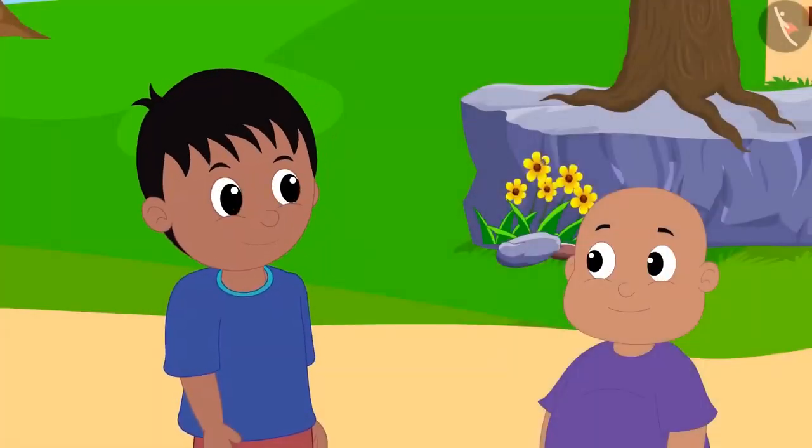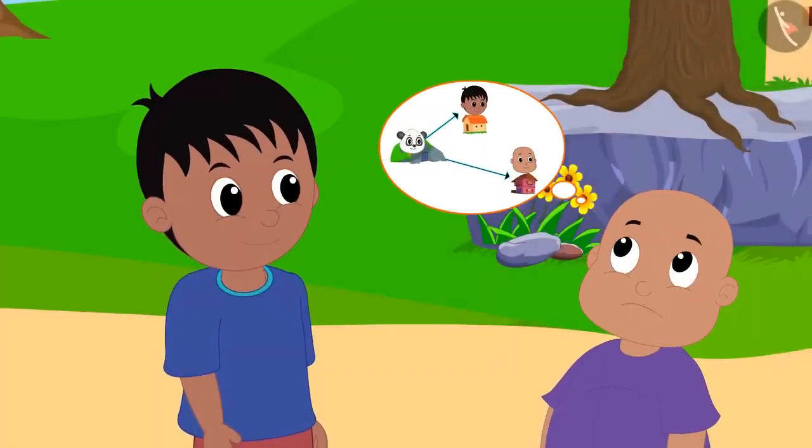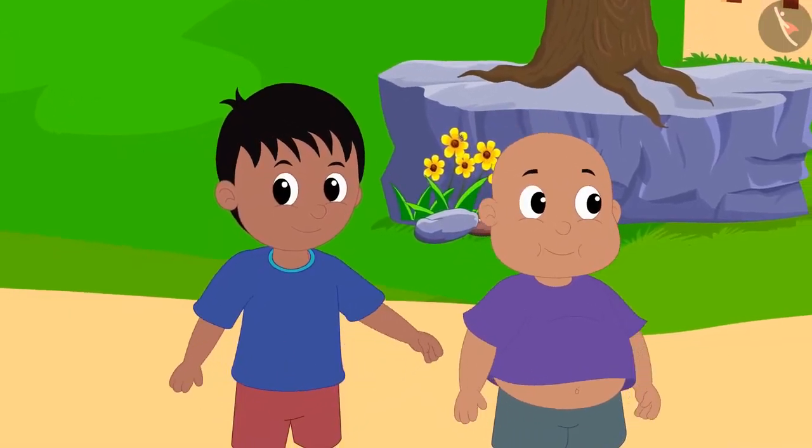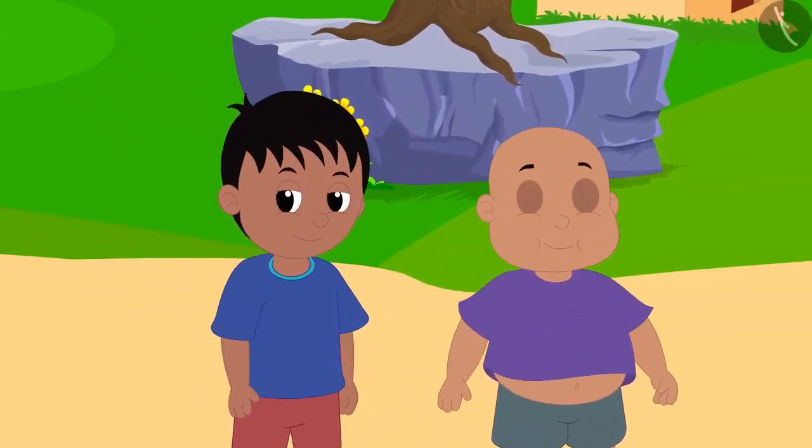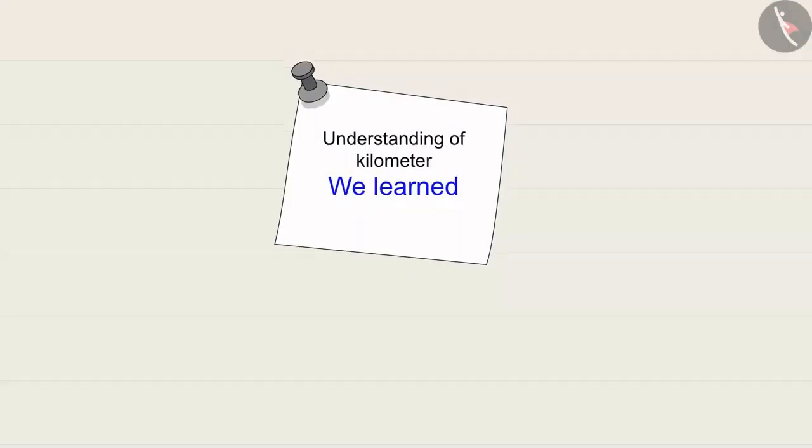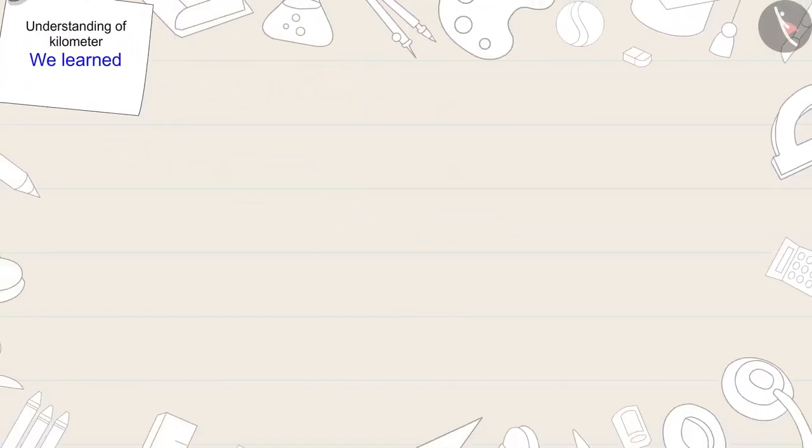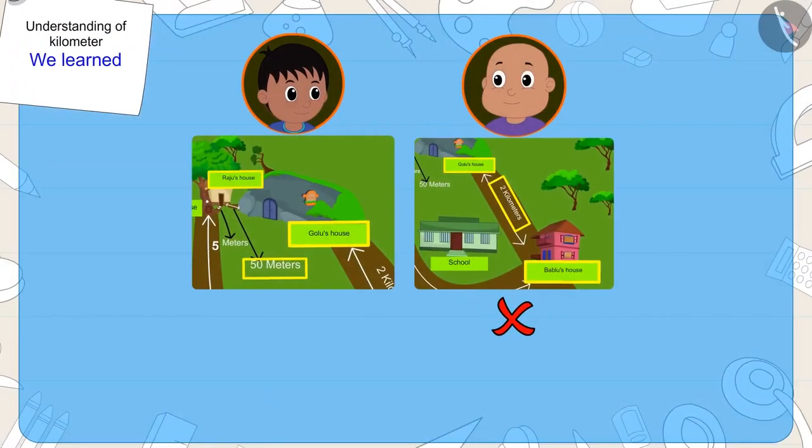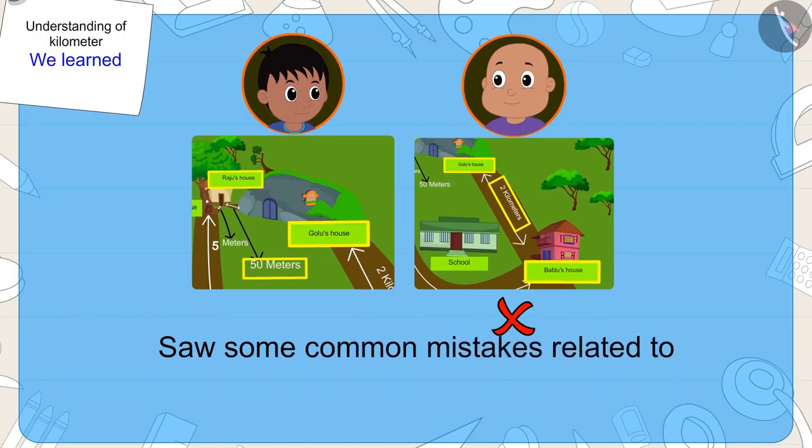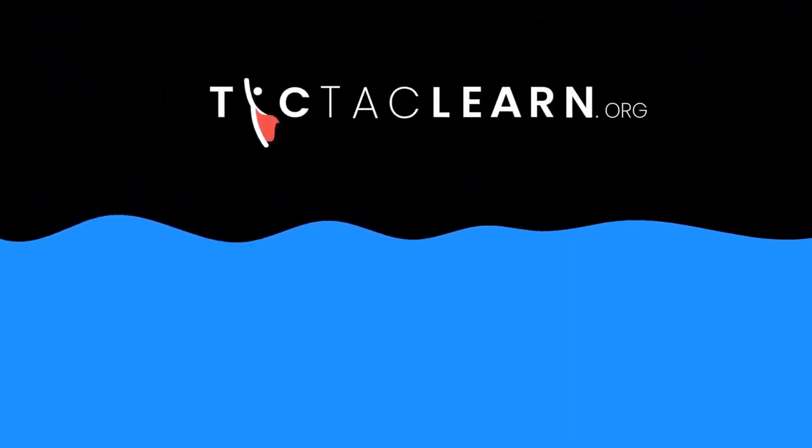Bablu finally understood Raju, and both of them went to play at Chanda's house. Kids, in this video, we saw some common mistakes related to measuring distances in kilometers.